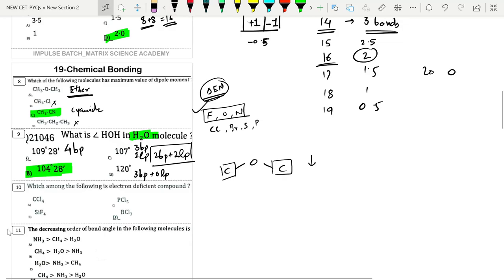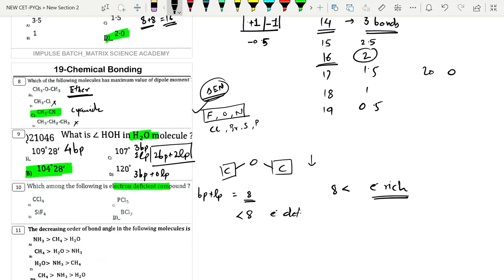Which among the following is electron deficient? When total electron count after adding bond pairs and lone pairs is less than 8, it's electron deficient. If we compare, SiF4 has 4 bonds which is 8 electrons, PCl5 has 5 bonds, and BCl3 has boron with three bonds which is 6 electrons plus no extra lone pairs. So option D is correct.